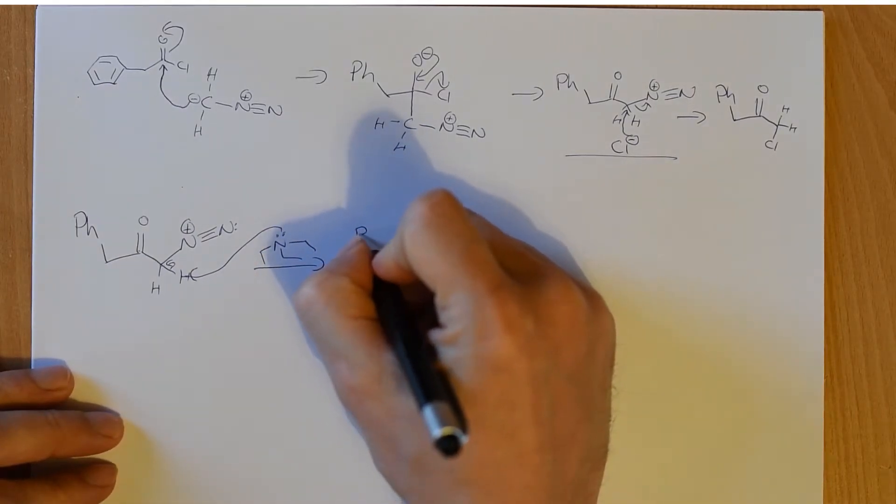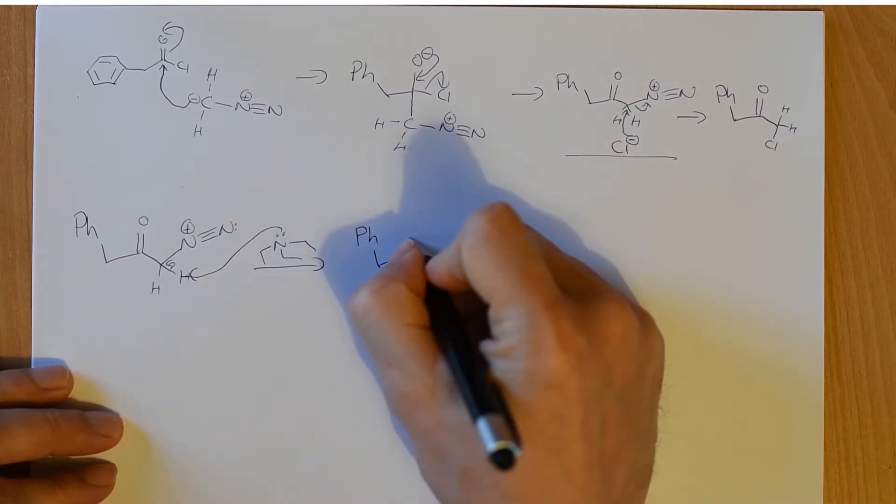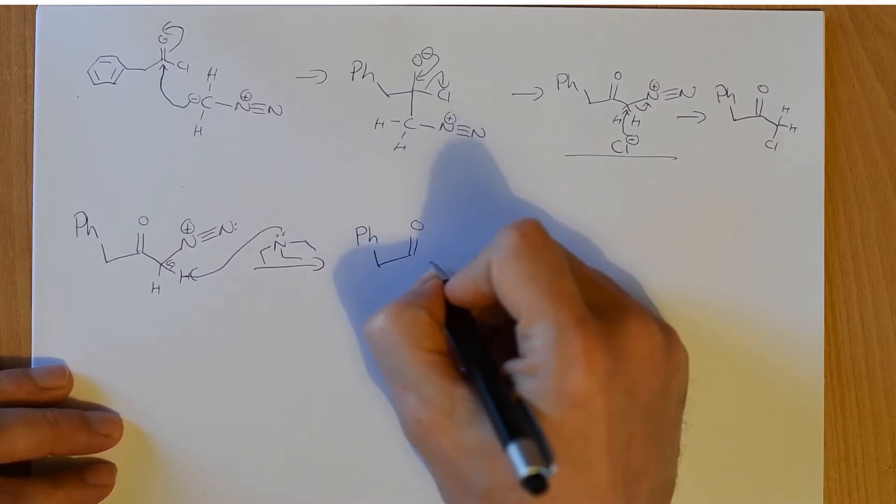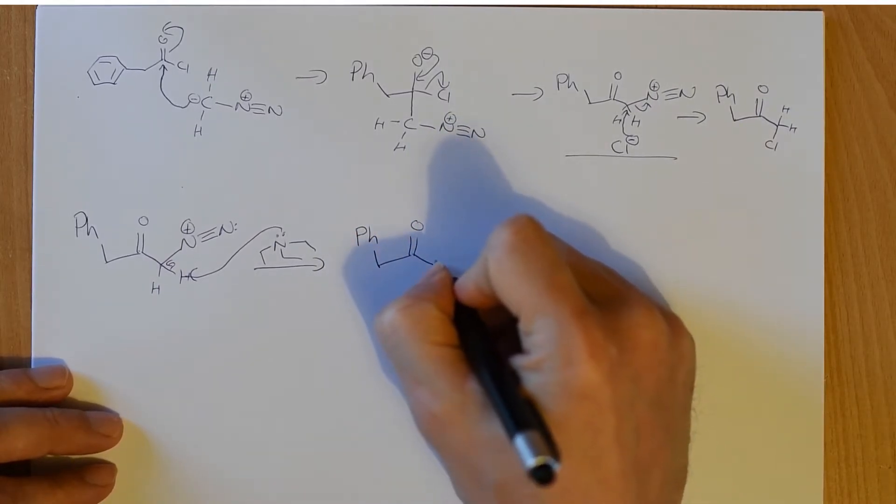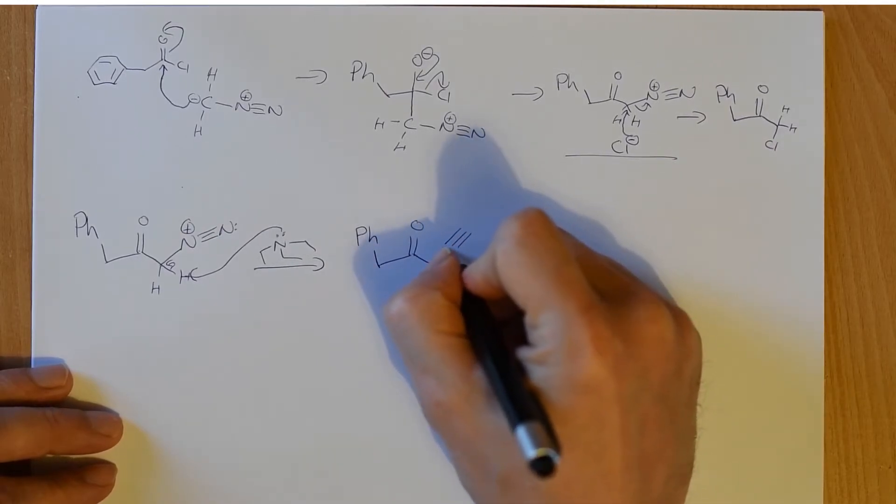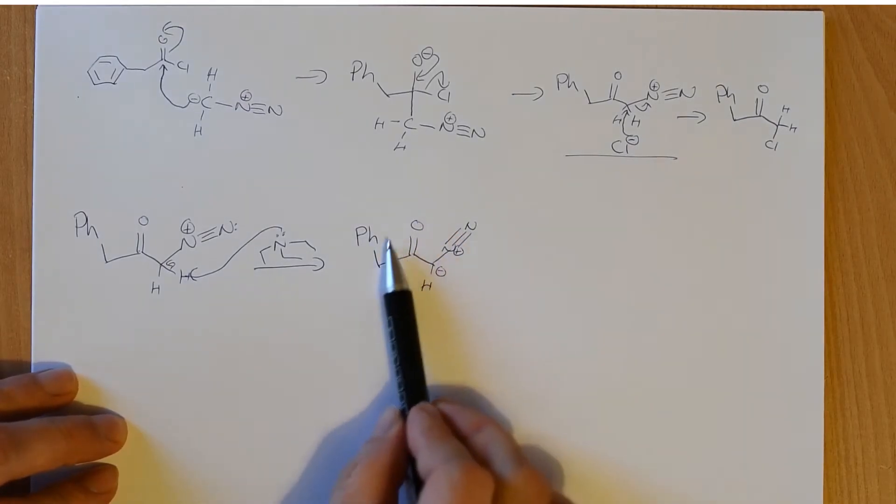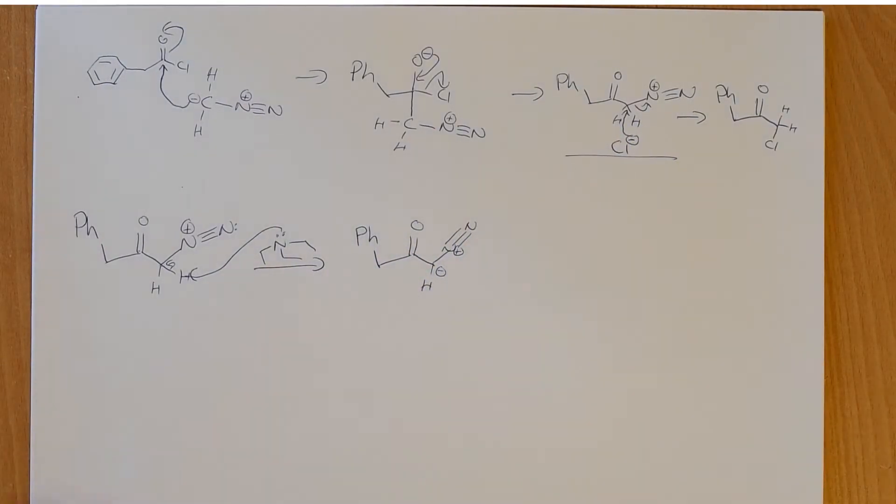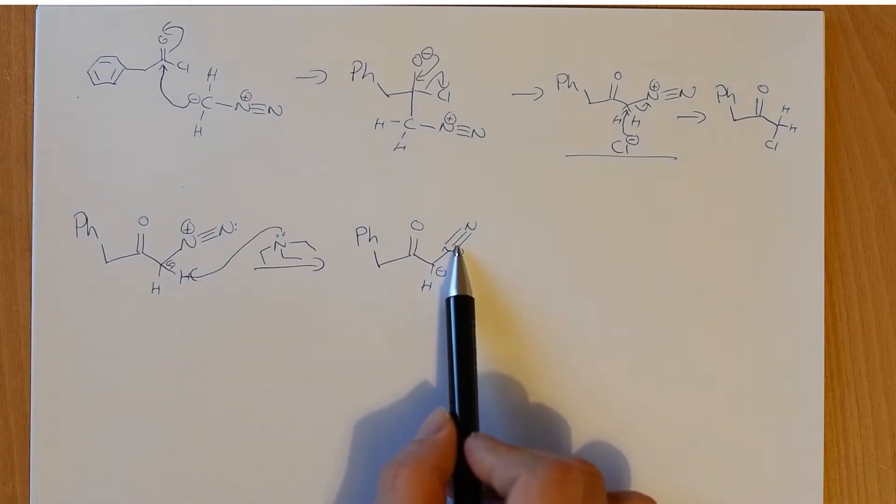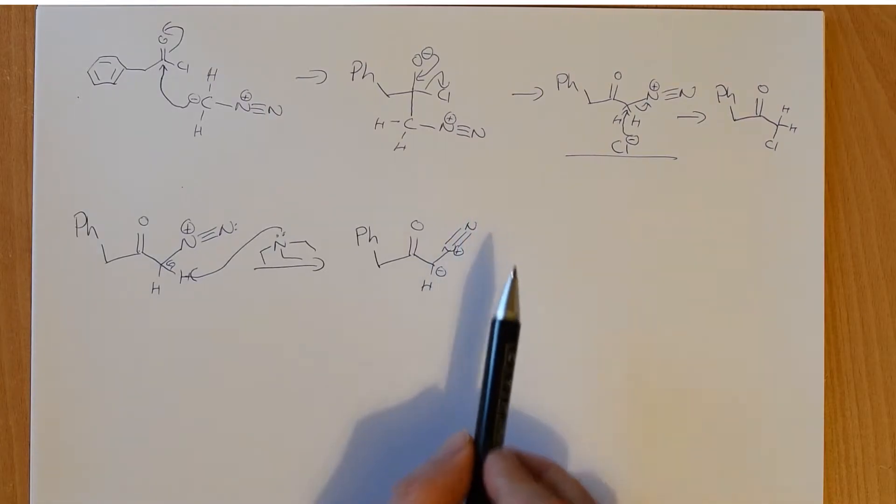And when it does that, what we have is our diazo group from the carbon next to the ketone. So this is a neutral molecule now. This molecule back here was positively charged, but we've now got our neutral molecule back again. Well, what can possibly happen? Yes, this can resonate. We can make the double bond and put the negative charge on the nitrogen.